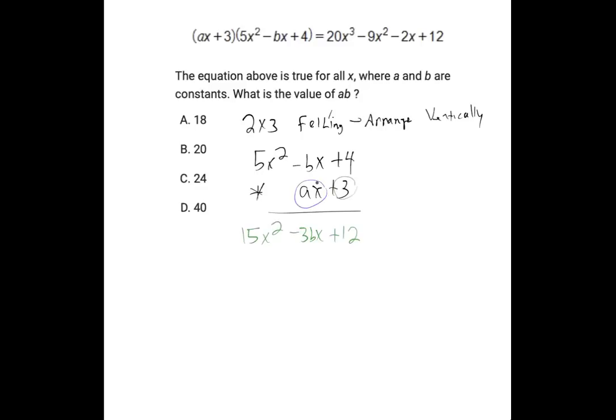Now, multiplying everything by ax, we have 4 times ax, so plus 4ax. And negative bx times ax, so negative abx squared. And now 5x squared times ax, so 5ax to the third.